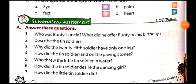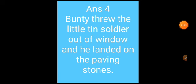Question number four: how did the tin soldier land on the paving stone? The answer is Bunty threw the little tin soldier out of the window and he landed on the paving stone. Note: this answer may not be explicitly in the book, but we have written it as the tin soldier falls onto the paving stone after being thrown.